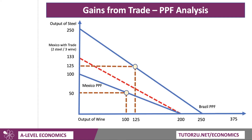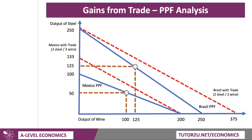Mexico, for example, would fully specialize in wine, producing 200 units, and then trade at two steel for three wine — in other words, giving up three wine for two steel, which is better than two for one. In theory, they could give up all their wine and get 133 units of steel. The red dotted line is the consumption possibility line with trade. For Brazil, originally giving up one for one, now giving up two units of steel they can get three units of wine, increasing their wine consumption in theory to 375.